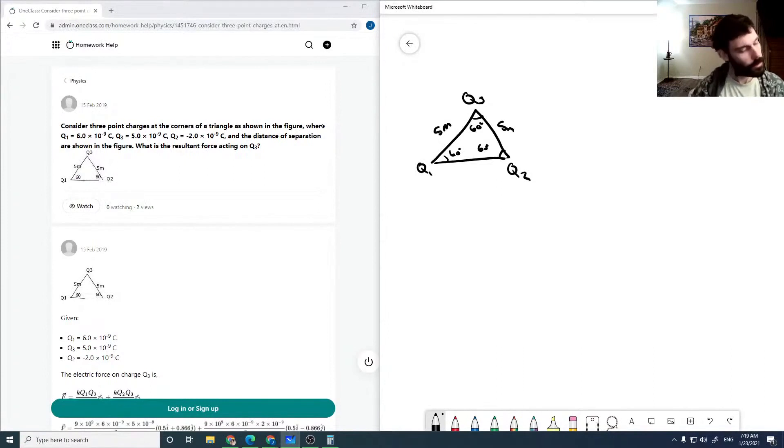We're given that Q1 is 6 times 10 to the minus 9 coulombs, Q2 is minus 2 times 10 to the minus 9 coulombs, and Q3 is 5 times 10 to the minus 9 coulombs.